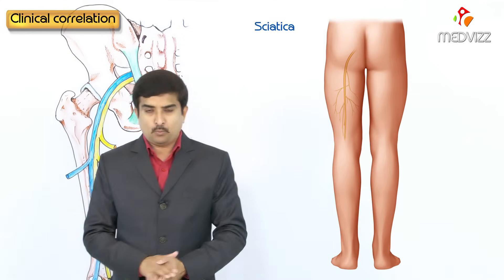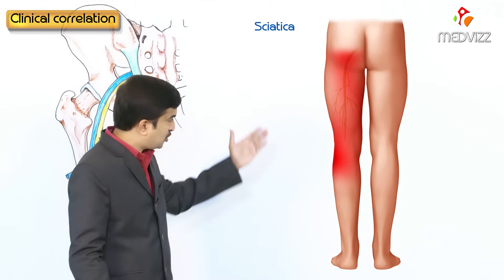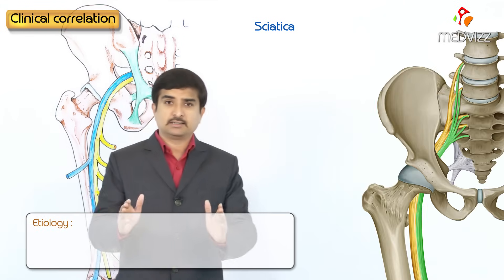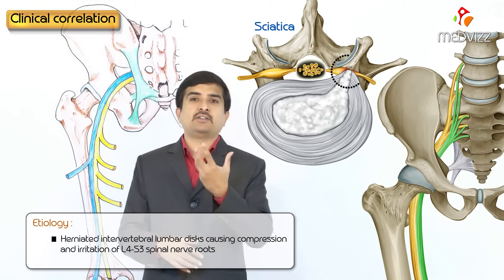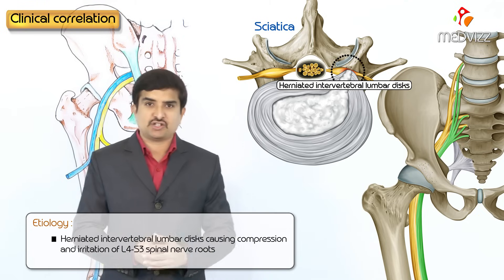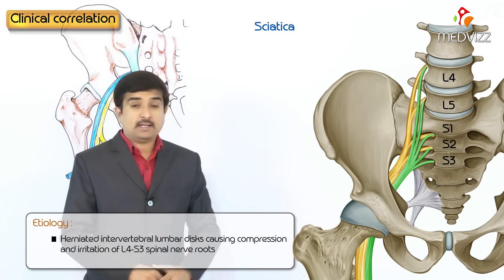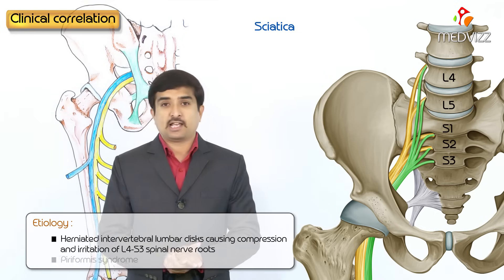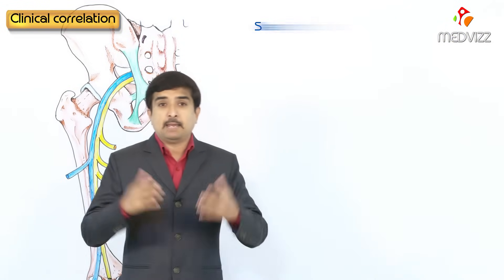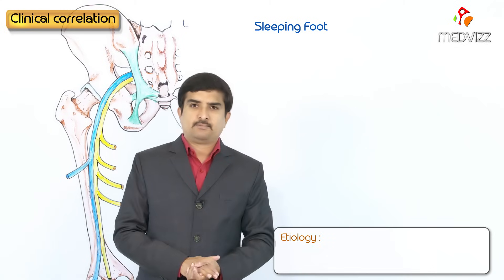Sciatica is a clinical condition characterized by a shooting pain felt along the course and distribution of the sciatic nerve. It occurs mainly due to herniated intervertebral lumbar discs causing compression and irritation of the spinal nerve roots from L4 to S3. It is also seen in piriformis syndrome, which was already discussed.